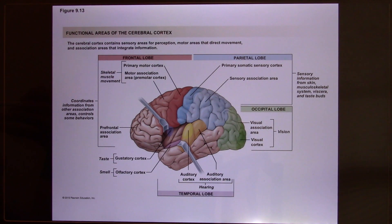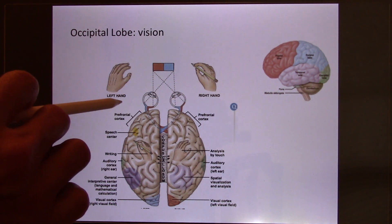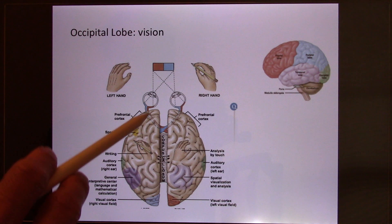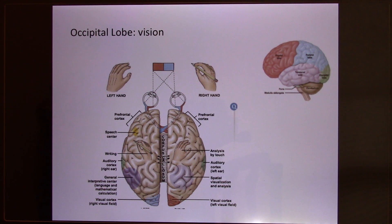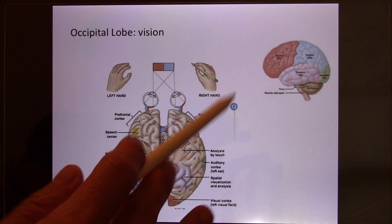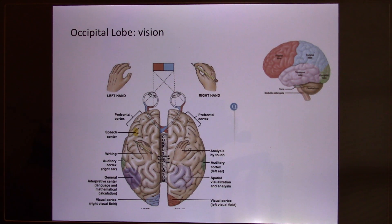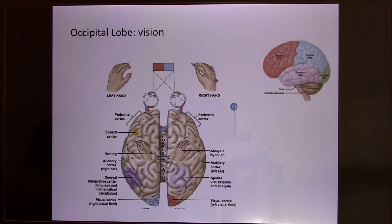Each lobe, we'll pick one to two functions to talk about since we don't have time to cover all of them. The occipital lobe's function is visual. Your visual information goes to your two eyes, from there through cranial nerve number two to the thalamus, and from the thalamus to the occipital lobe. You have left and right occipital lobes. Your brain is lateralized — the left brain controls the right side of the body, the right brain controls the left side. If a patient has a stroke on the left brain, it paralyzes the right side of the body.